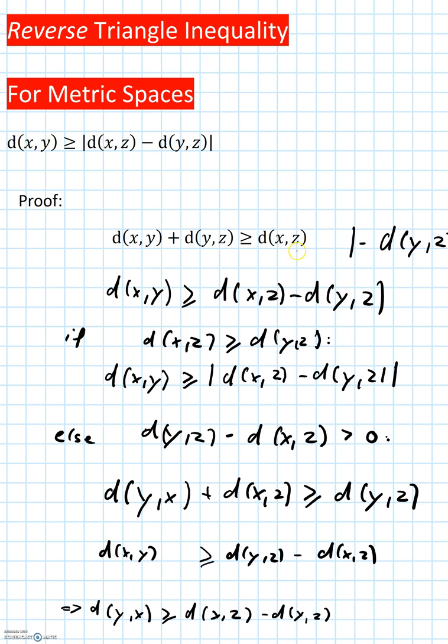And now what we do is we subtract d(y,z) from both sides to get d(x,y) is greater than or equal to d(x,z) minus d(y,z). And now have a look at this expression here.